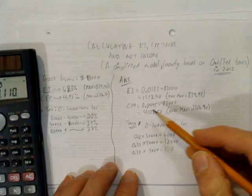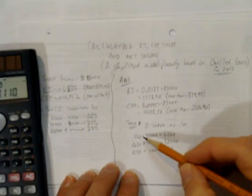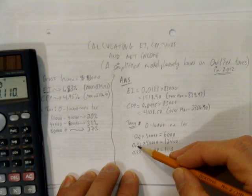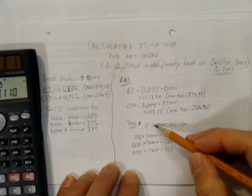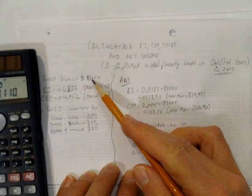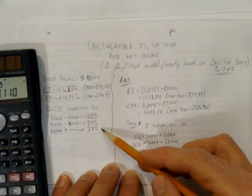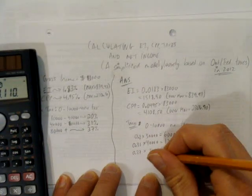So, the first $10,000 free. The next $30,000 taxed at 20%. The next $40,000 taxed at 31%. That's the first $80,000 of their $83,000. That last $3,000 is in the top tax bracket. It gets taxed at 37%.